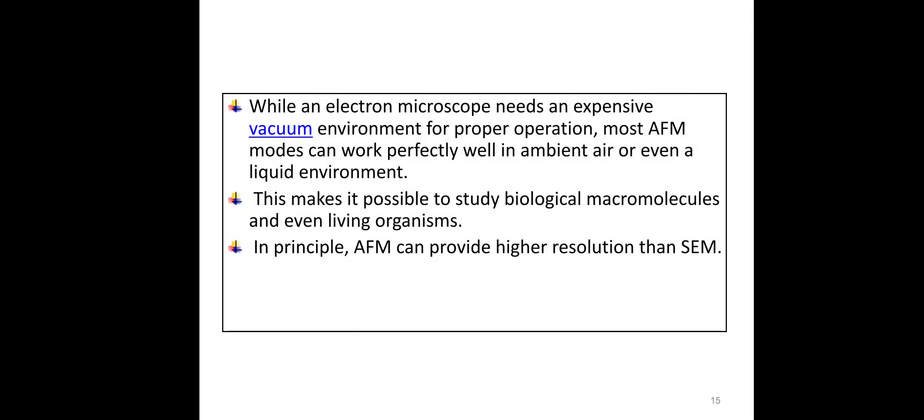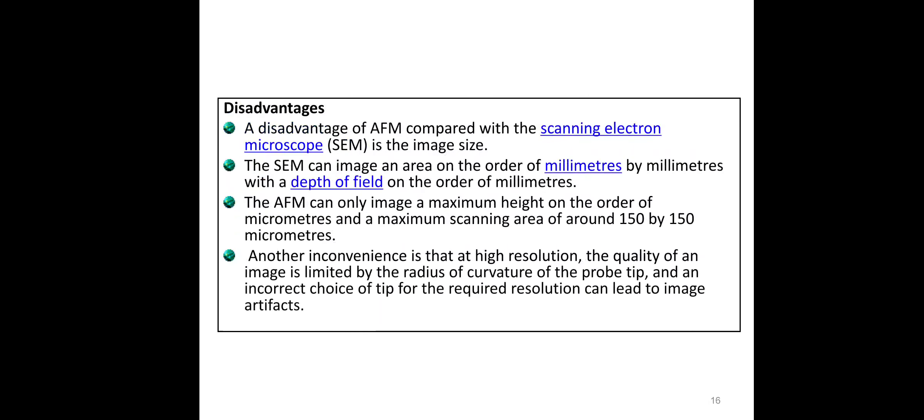AFM makes possible the study of biological macromolecules at higher resolution. However, there are some disadvantages: image size is comparatively low, and the imaging area is only in micrometers — AFM can only image a maximum height on the order of micrometers, around 150 by 150 micrometers. Also, image quality is limited by the radius of curvature of the tip, and incorrect choice of tip for the required resolution can lead to image artifacts.